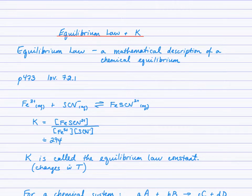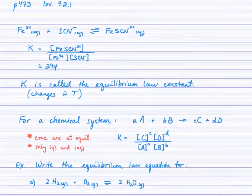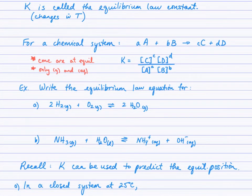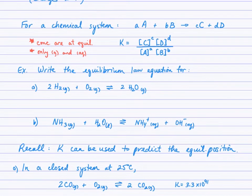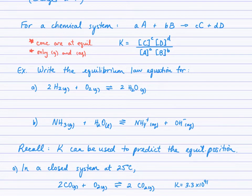We'll look at that after we explore Le Chatelier's principle in another lesson. So it's important then that you're able to write an equilibrium law equation. I've given you a general equation here. Lowercase a, b, c, and d are the balancing coefficients. Capital A and B are reactants. Capital C and D are products.